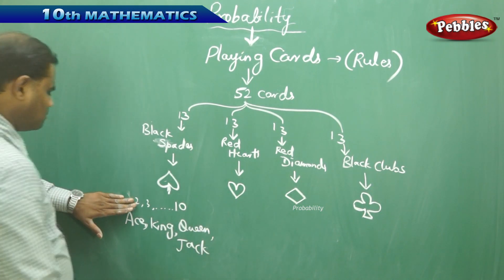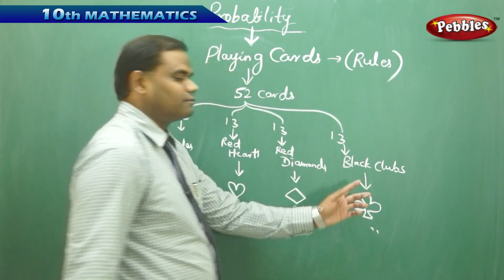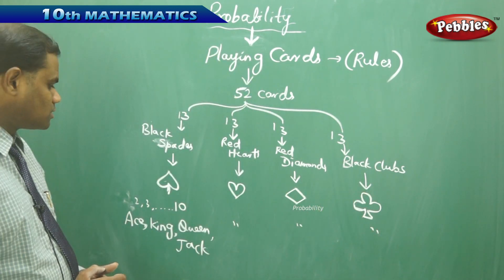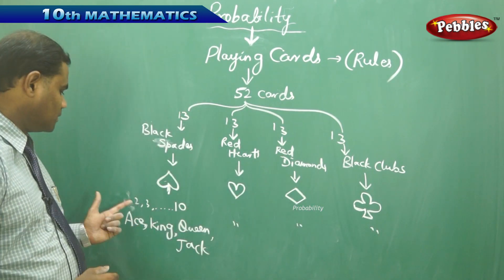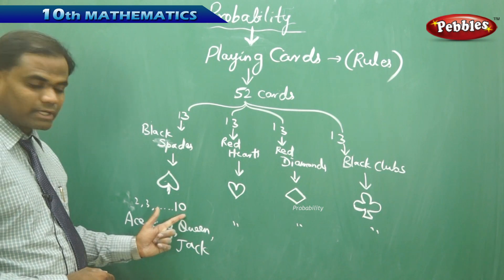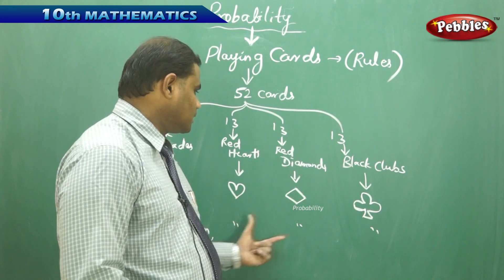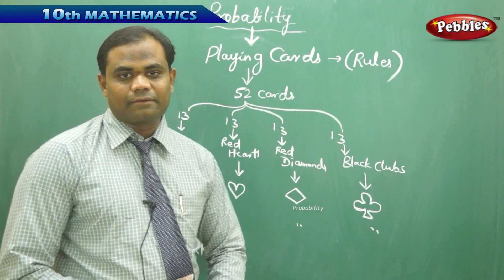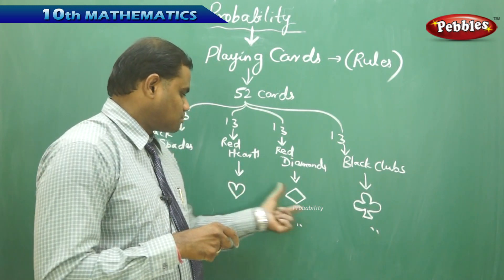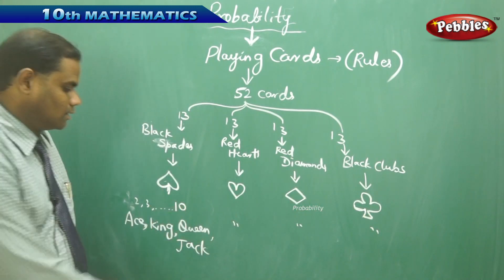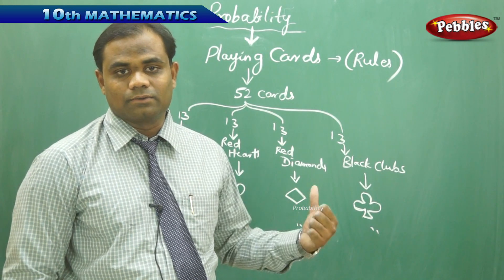Similarly, the numbers 2 to 10 and ace, king, queen, jack apply to each of the different suits including black clubs. So we have 4 different types of cards, each numbered from 2 to 10 plus ace, king, queen, and jack, with red hearts, red diamonds, and black clubs each having the same numbers and count with their own symbols. This gives the total playing card structure.